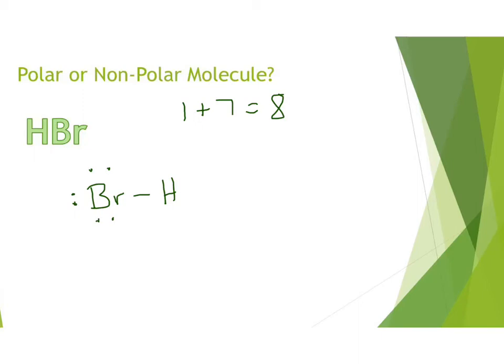Then we need to look up electronegativity values. Hydrogen is 2.1, bromine is 3.0. So we always do the large number minus the small number, giving us a difference of 0.9. That means these bonds are polar bonds.